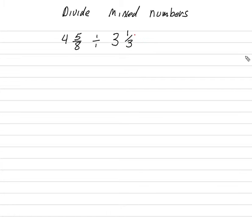Dividing mixed numbers. We're going to divide 4 and 5 eighths by 3 and 1 third.